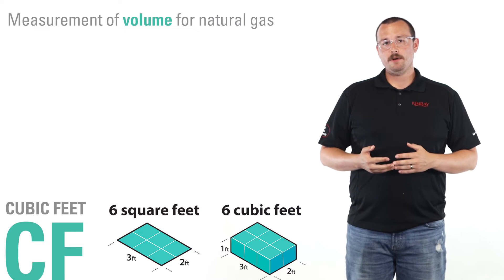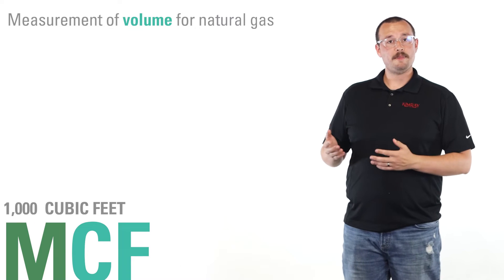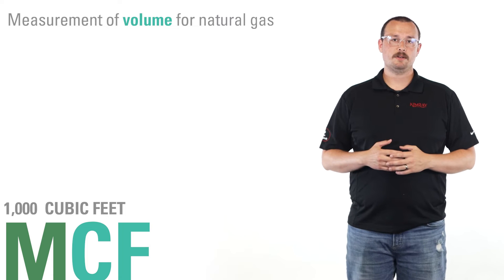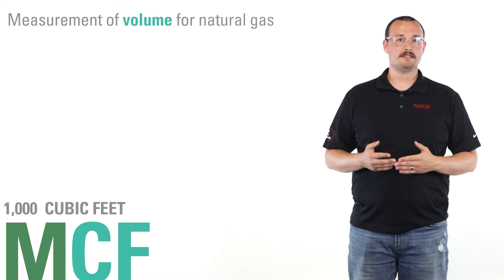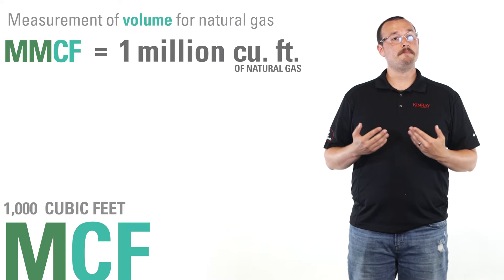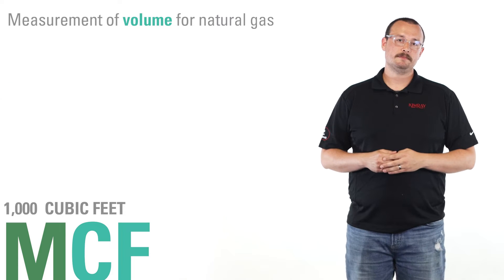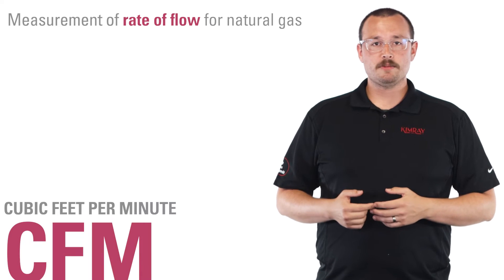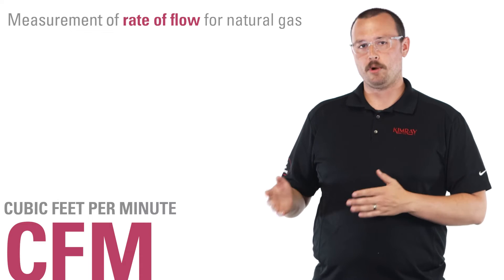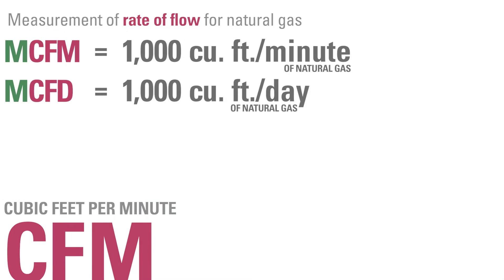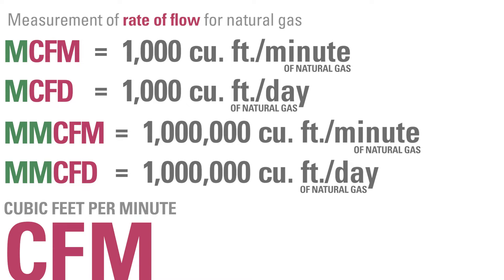Cubic feet is the measurement of volume used for natural gas. MCF stands for 1,000 cubic feet of natural gas. Total gas reserve volumes are not typically in thousands of cubic feet, but rather in millions, billions, and trillions of cubic feet. CFM is the measurement of the rate of flow for natural gas and is written as per day or per minute. Again, the prefix M is 1,000 and MM is million cubic feet per day.